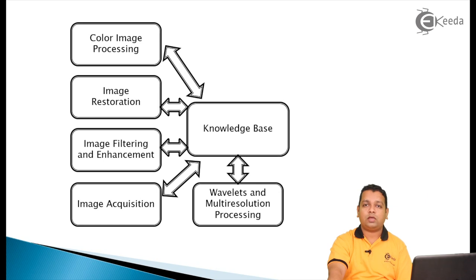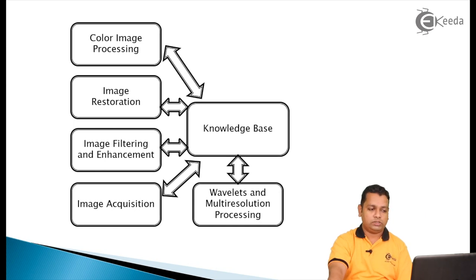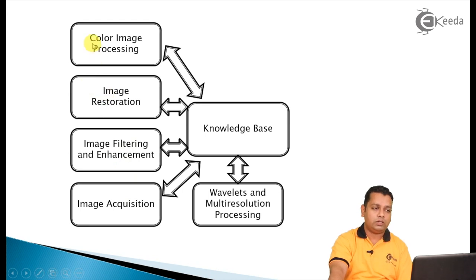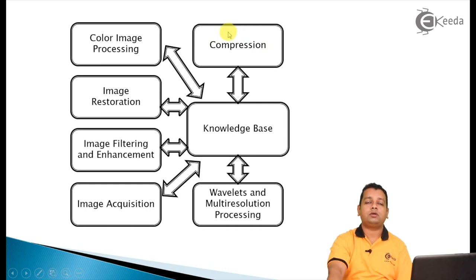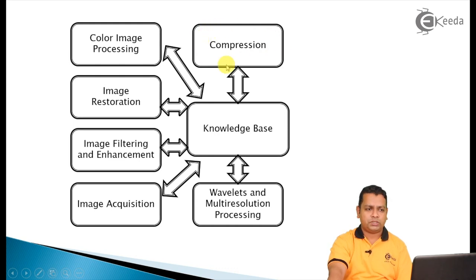Image information at one resolution may not be available at another resolution, so obtaining information at multiple resolutions is the basic idea behind this processing. The sixth fundamental step is image compression, which minimizes the memory required for storage and the bandwidth required for transmission of image data from one place to another.